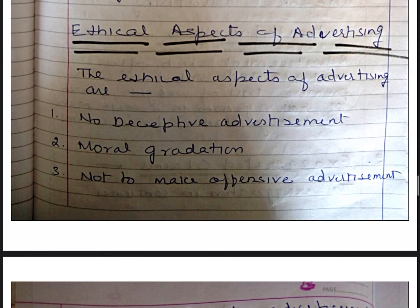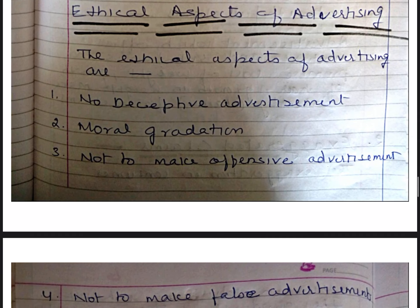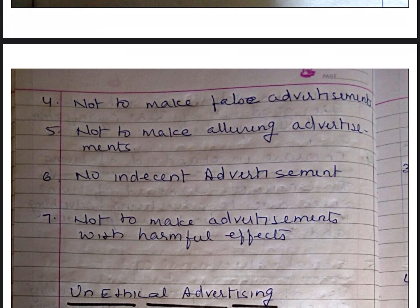Third, not to make offensive advertisements. Due to rising competition, some advertisements tend to become more offensive. To make advertisements more effective, they break all the rules and ignore ethics — they use vulgar photos in their advertisements. Fourth, not to make false advertisements. Many advertisements give misleading messages as some information and claimed facts are exaggerated. Many times such advertisements cheat people. Many people call this sales through fraud.